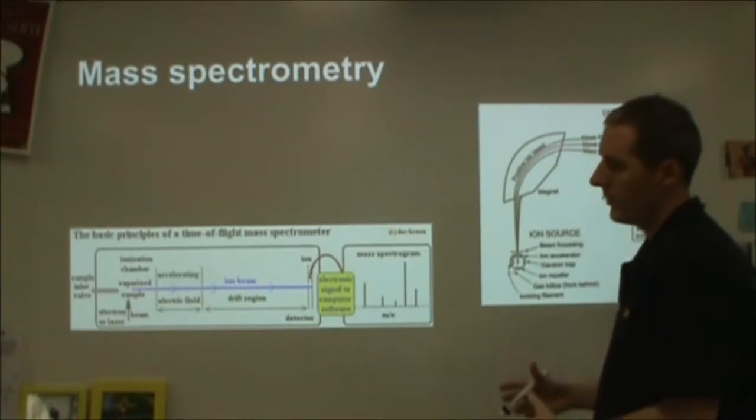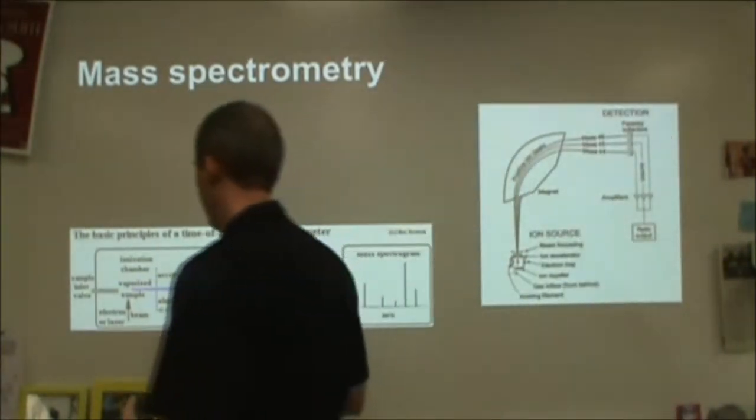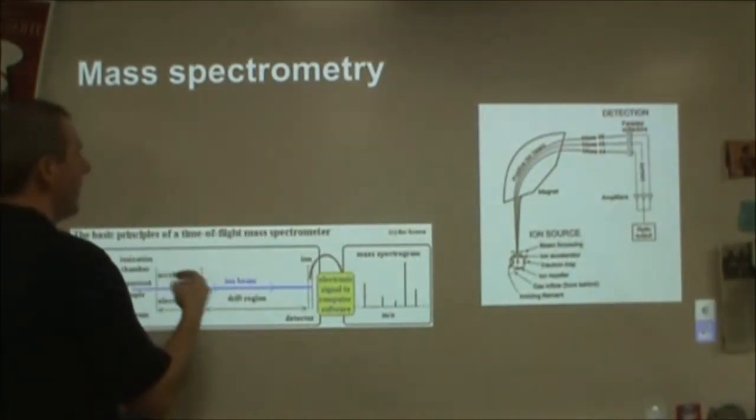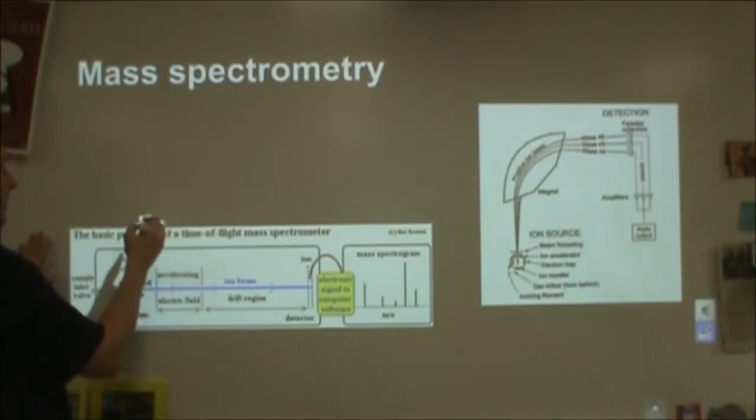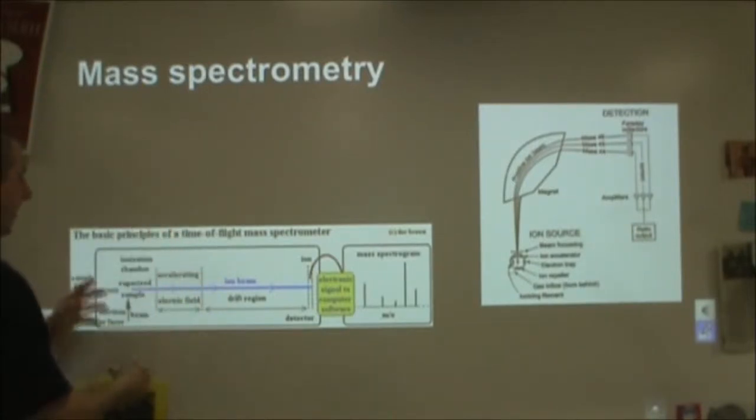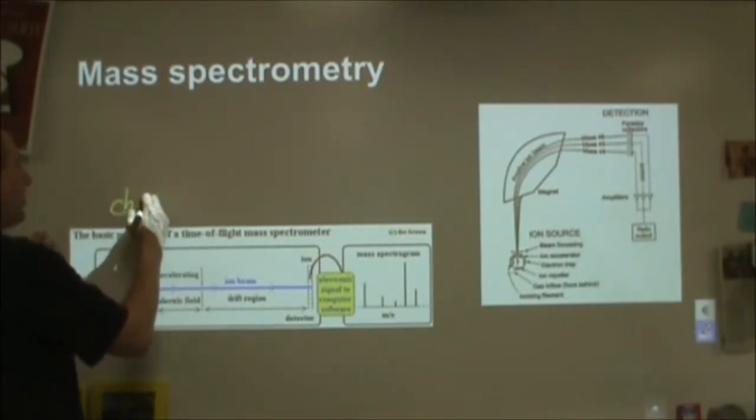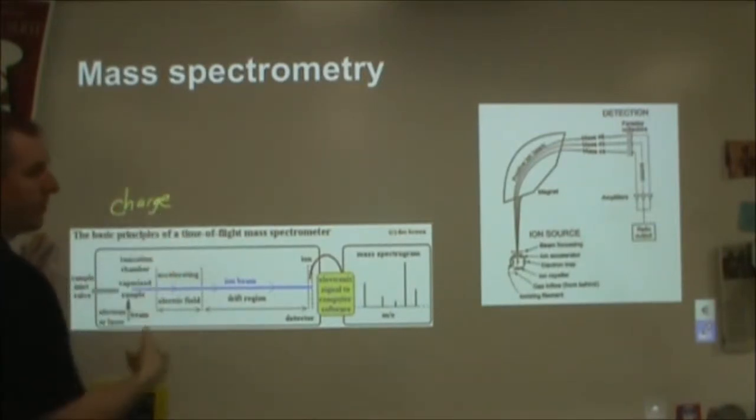The way the mass spectrometer works is usually broken down into three or four steps, depending on the level you're going into. So here in a simple step, we want to look at three things. The very first thing you do is you put your sample into a mass spectrometer, and somehow you add charge to it. You have to ionize your sample.